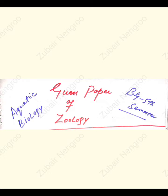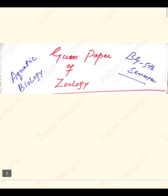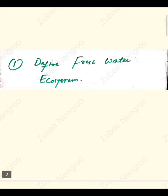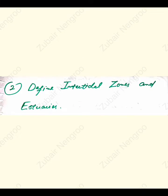So we will discuss the most important questions in this paper. Question number one: define freshwater ecosystem. Question number two: define intertidal zones and estuaries. Question number three: physiochemical environment.